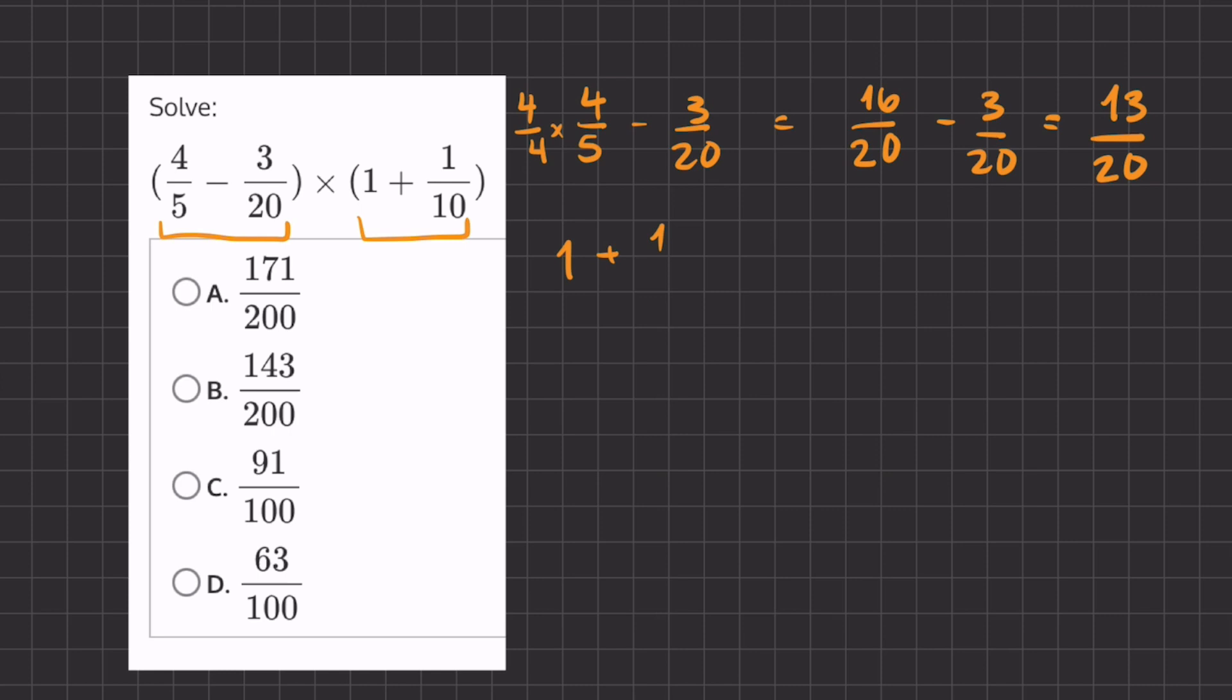Now let's take 1 plus 1 tenth, and let's turn this 1 into 10 over 10 to get a common denominator and we'll add it to 1 tenth. Now we can add our numerators and we'll have 11 over 10.